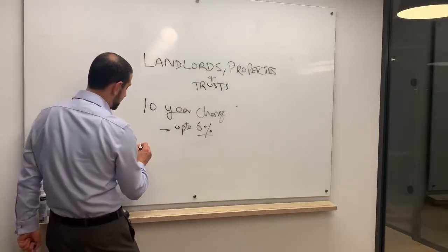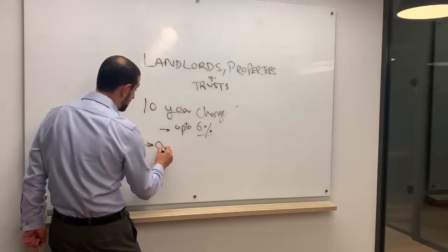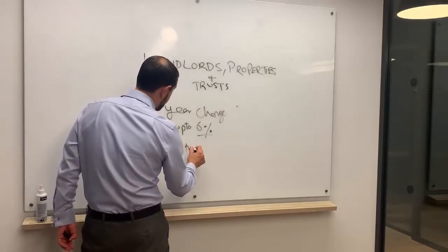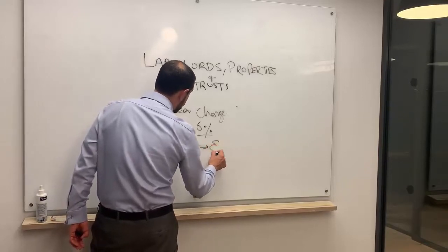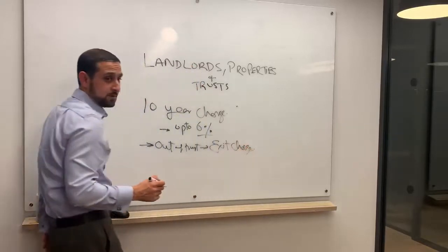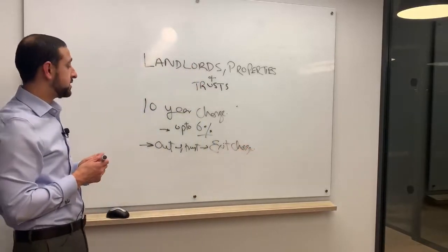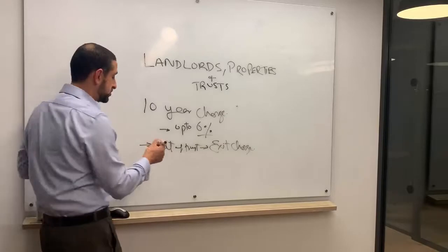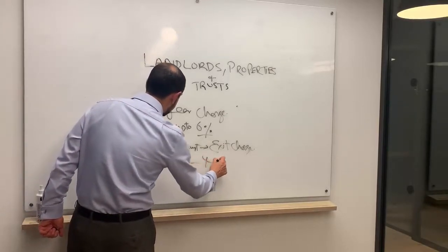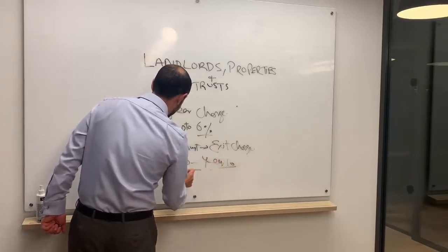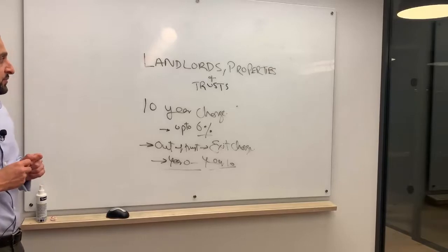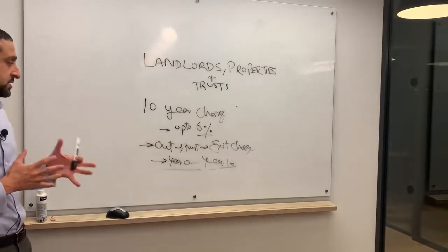If you get properties out of the trust, you have to pay something called an exit charge. Exit charges depend on how many quarters you've completed between year 0 and year 10. This can be quite expensive. There are a lot of complications around trusts.